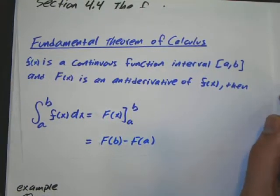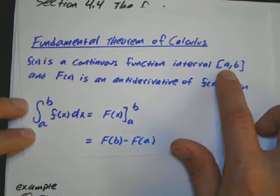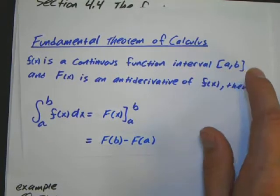So what it says is that f(x) has to be a continuous function. In this interval there can't be a jump, there can't be a vertical asymptote, it has to be continuous.